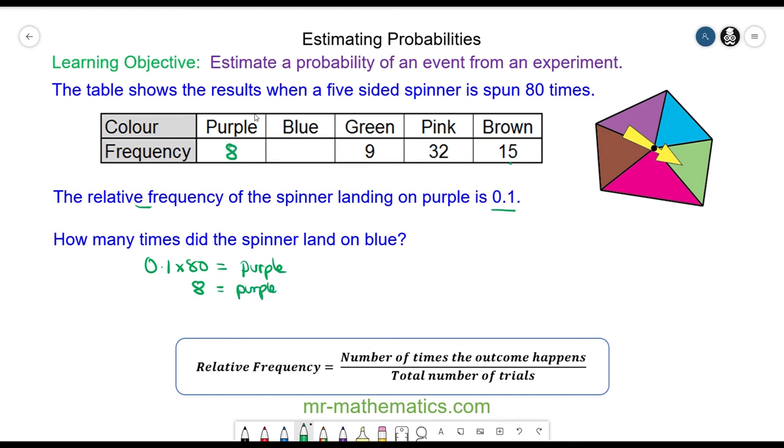How many times did the spinner land on blue? There were 80 trials in total. So 80 minus the purple minus the green, the pink, and the brown is 16. So it would have landed on blue 16 times.